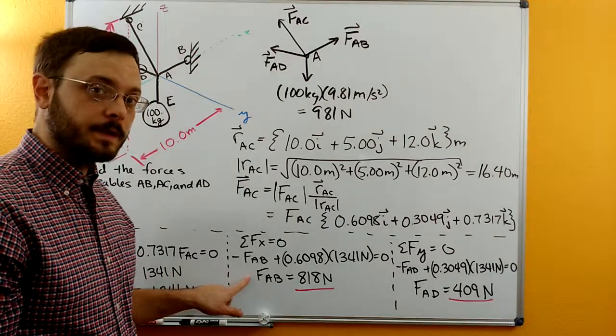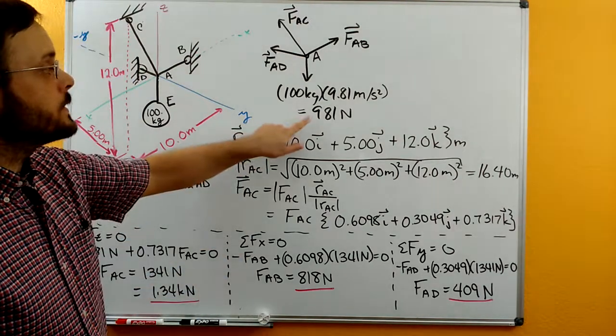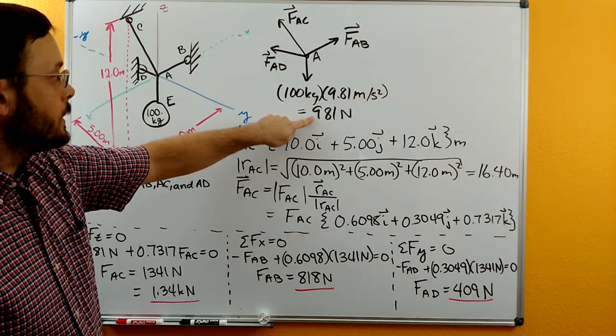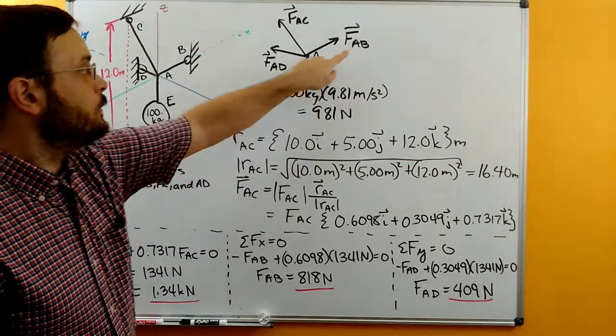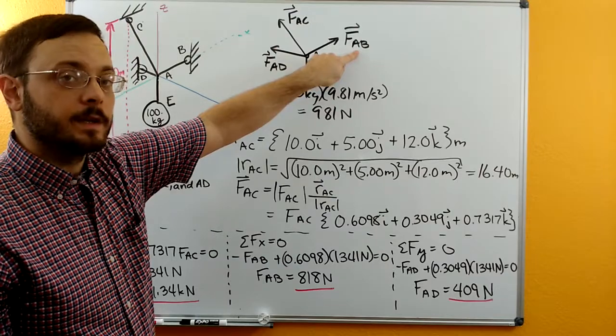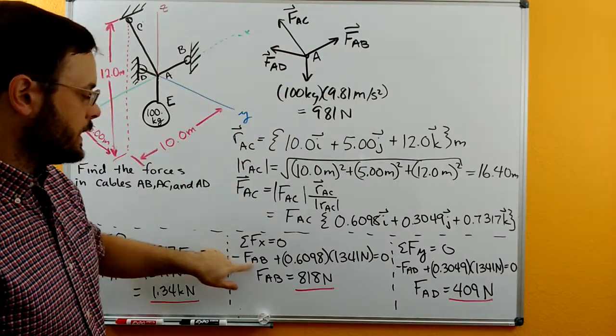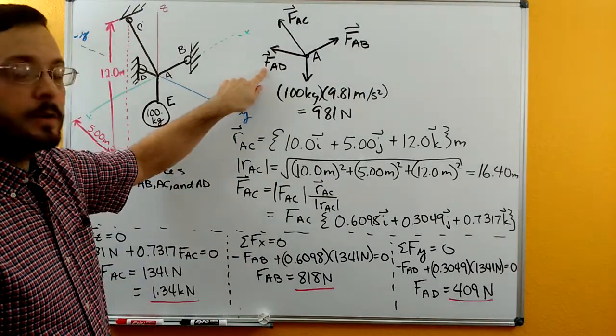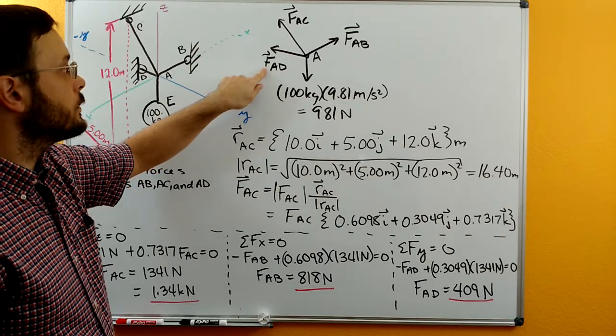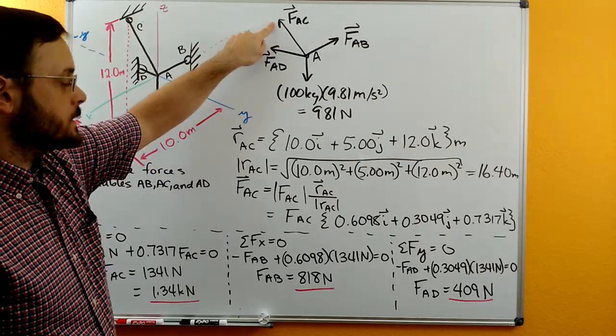Then we can do sum of forces in the x direction. There's no x component here. Looking at FAB though, FAB goes in the negative x direction so we'll write a negative FAB. There's no x component of FAD so it's not in the equation and then we'll take the x component of FAC.